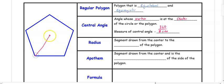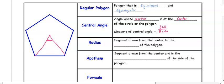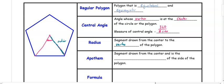The two lines forming a triangle create the central angle. The radius is a segment drawn from the center to the vertex of the polygon — we have two radii here. The apothem is a segment drawn from the center to the midpoint of a side, splitting that side into two congruent parts.